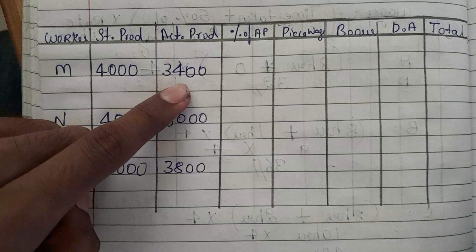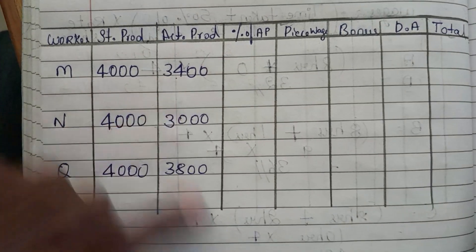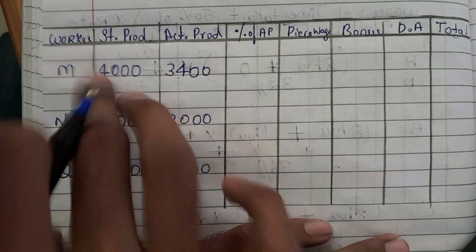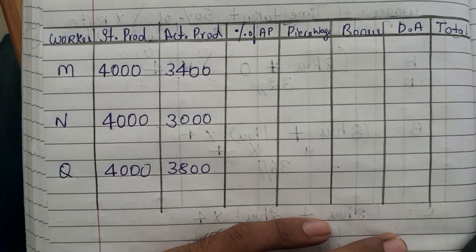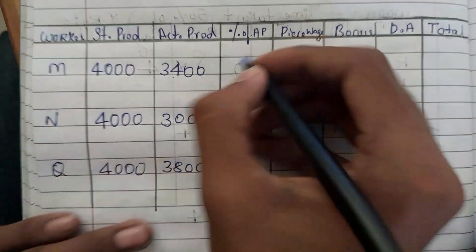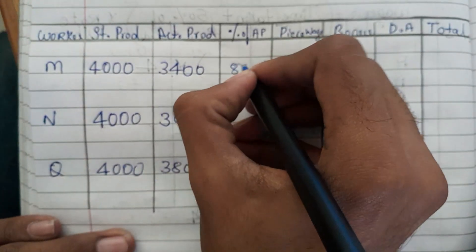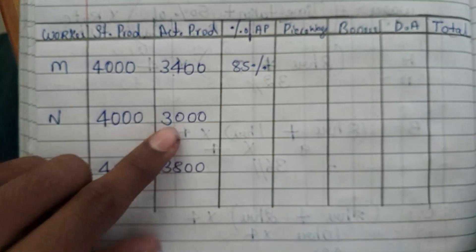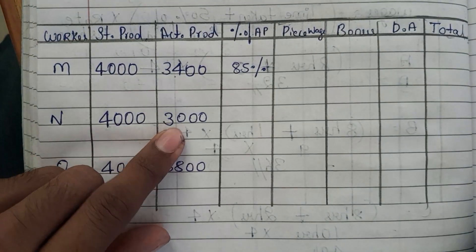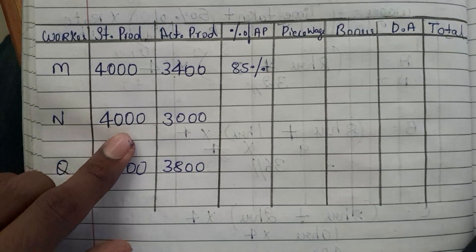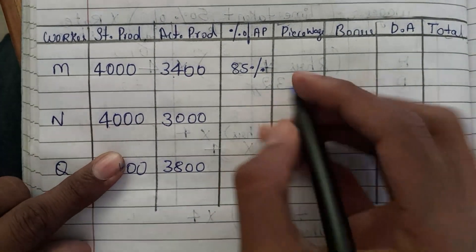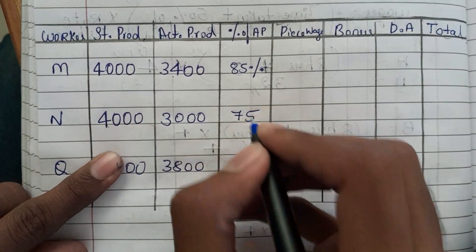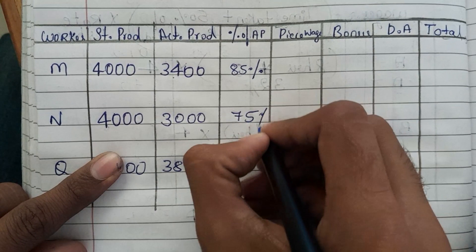Now for the percentage calculation: 3400 divided by 4000 into 100 gives 85 percent for M. Then 3000 divided by 4000 into 100 gives 75 percent for N.